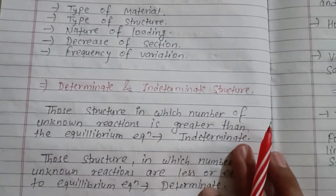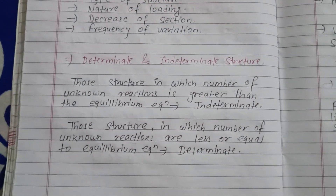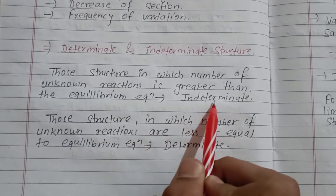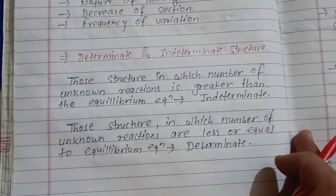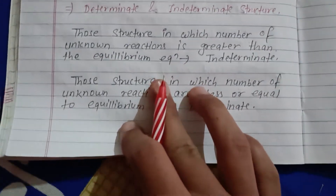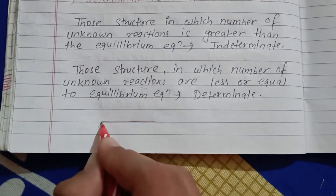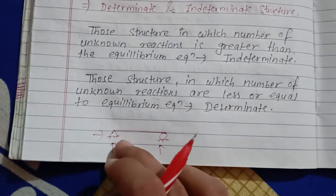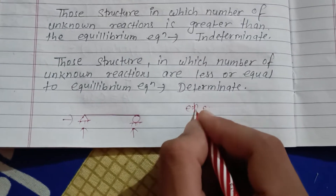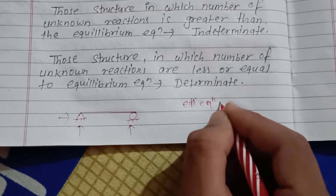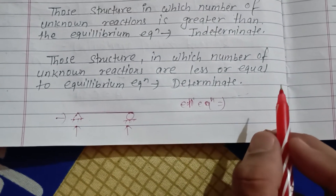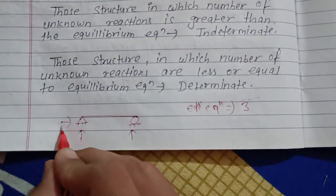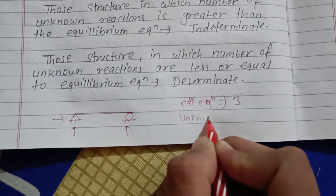Determinate and indeterminate structures: those structures in which the number of unknown reactions is greater than the equilibrium equations are known as indeterminate structures. The equilibrium equations are: moment equal to zero, horizontal forces equal to zero, and vertical forces equal to zero.